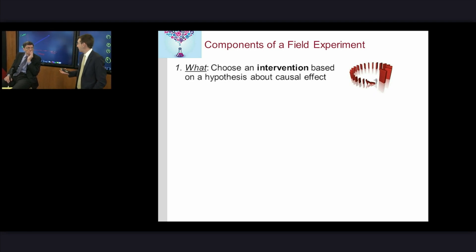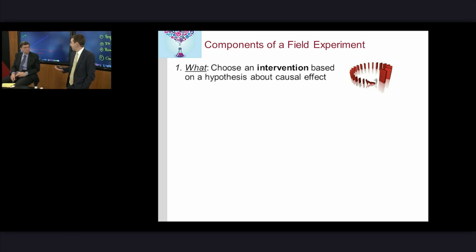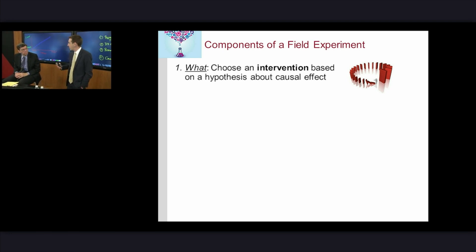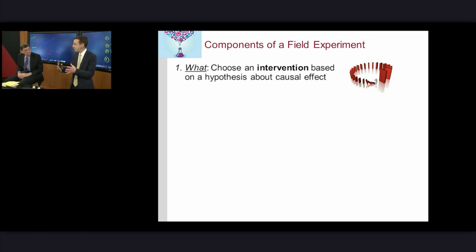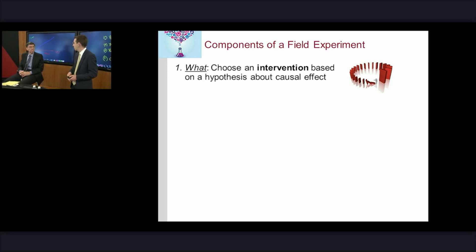Let's use HBS as a perfect example of a field experiment — one we're conducting on ourselves. We're standing here in the middle of HBX after all. There are only four key points of a field experiment. The first is an intervention. In this case, HBX is not on campus — we're at the WGBH studios — and we've created something outside of our normal way of doing work. That's our intervention.